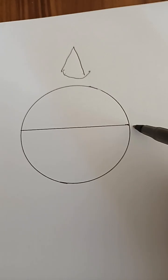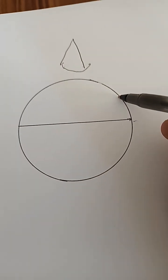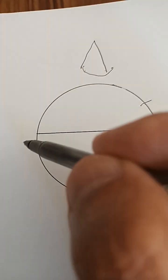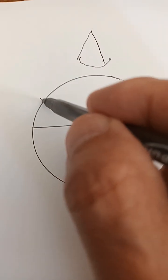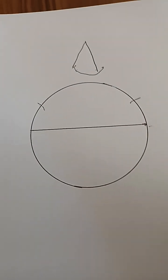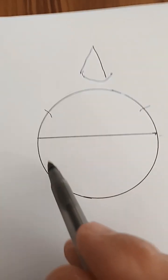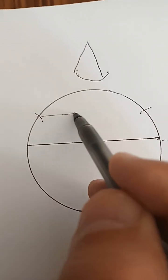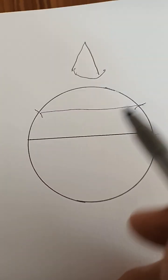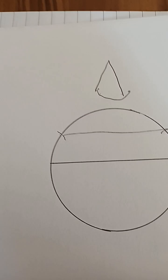Then we place one point there and with the same width mark off a point on each circumference. Then all we do is we join those points with a ruler or a straight edge. And guess what?